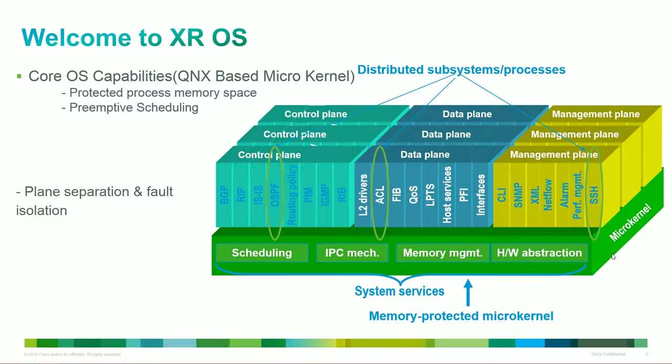Part of the XR OS software built into it is a distributed subsystem process plane. What that means is we build on top of a predefined kernel, and part of that is separated into three different planes: control, data, and management. We can actually protect our kernel while running these additional processes on top of it — things like our routing protocols within our control plane — while still protecting the kernel so it doesn't crash, and helping with security for buffer overflow.